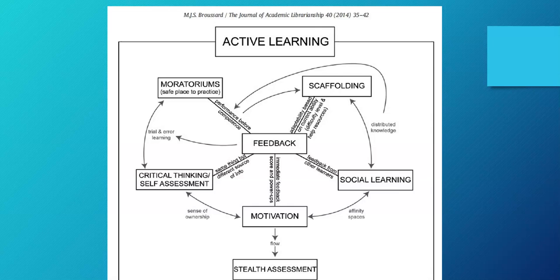To have formative assessment, you need an environment of active learning. Feedback is central — there must be a conversation between learners and the educator. Scaffolding is also important: an instructor asks students to do something with many supports, then gradually removes those supports so students develop mastery and independence. Social learning matters too — students learn from each other and can receive feedback from peers, not just the instructor, and they can do more socially before doing things independently.